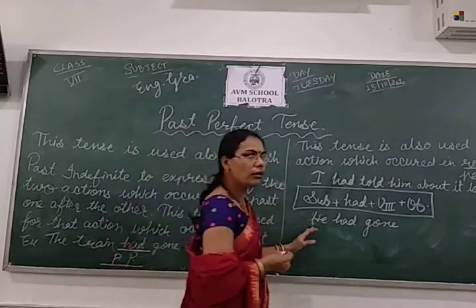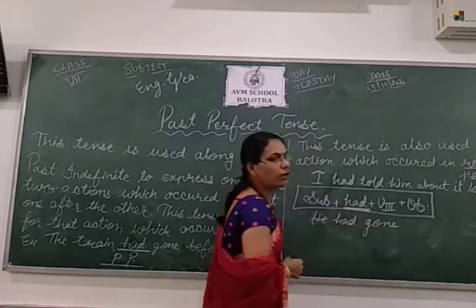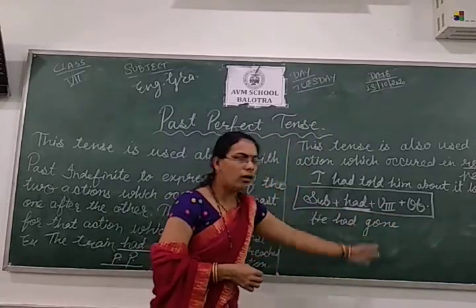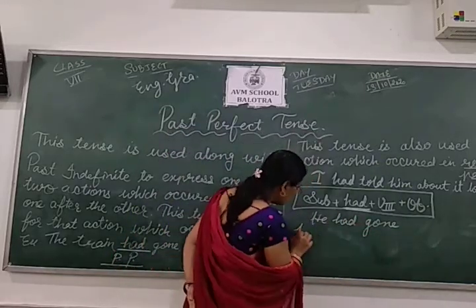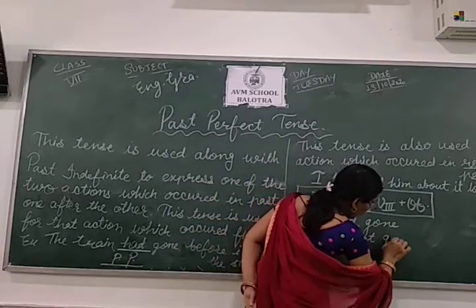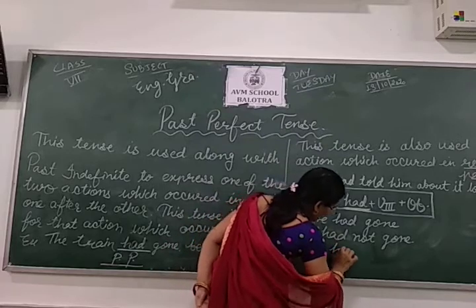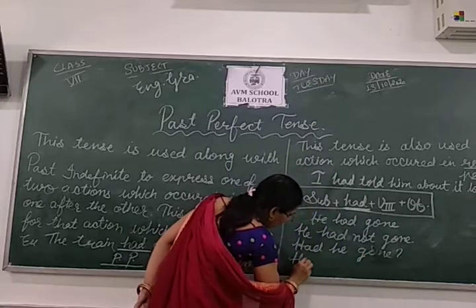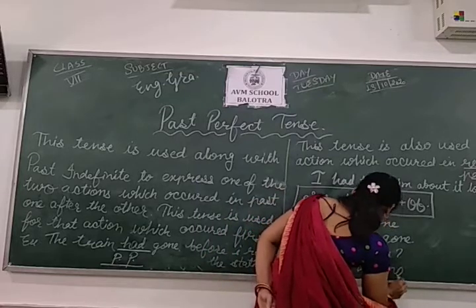The formula is: subject plus 'had' plus the third form of the verb plus object. For example: 'I had gone,' 'He had gone.' For negative: 'He had not gone.' For interrogative: 'Had he gone?' For interrogative negative: 'Had he not gone?'